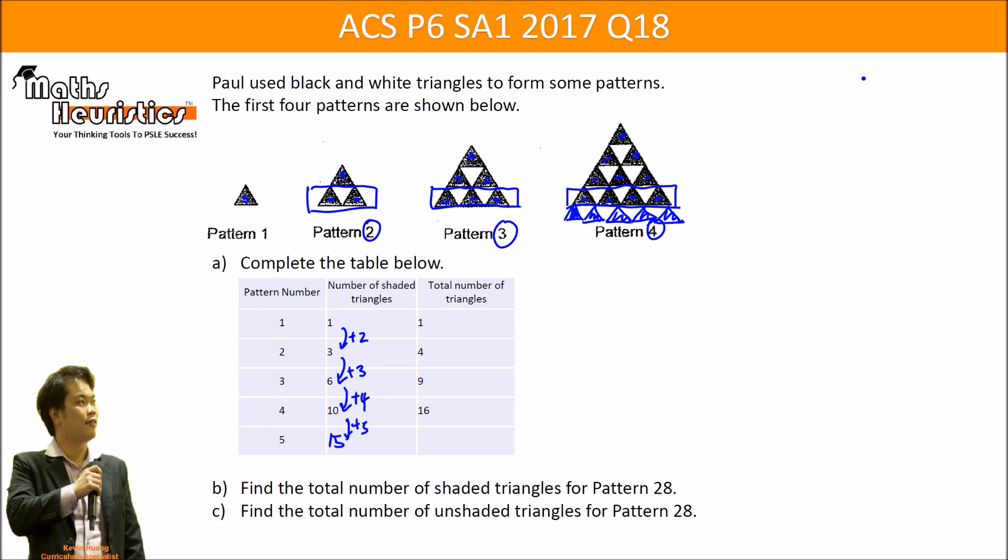Now what about the total number of triangles? There are two ways you can do it. The first one is to manually count everything, or the second one is to observe that these are square numbers.